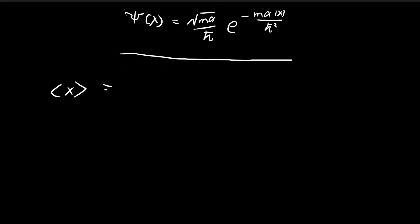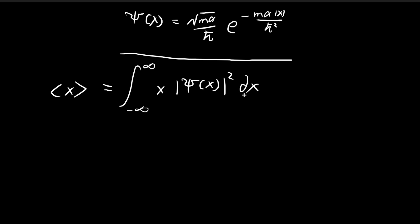We're going to start off with the expected value of x. The formula is just x multiplied by the absolute value of ξ(x) squared dx. You can see that this is actually just an odd function, so this is going to be equal to zero. If you integrate an odd function from negative a to positive a, you get zero. We're integrating from negative infinity to positive infinity, so in the end you get zero.